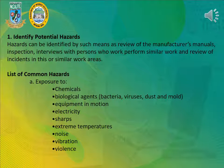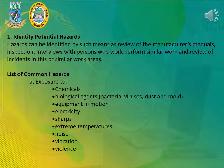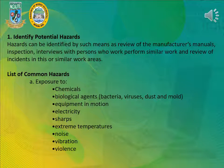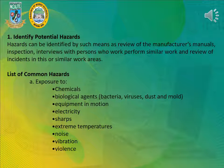1. Identify potential hazards. Hazards can be identified by such means as review of the manufacturer's manuals, inspection, interviews with persons who perform similar work, and review of incidents in this or similar work areas. List of common hazards — A. Exposure to: Chemicals, Biological agents (Bacteria, Viruses), Dust and mold, Equipment in motion, Electricity, Sharps, Extreme temperatures, Noise, Vibration, Violence.